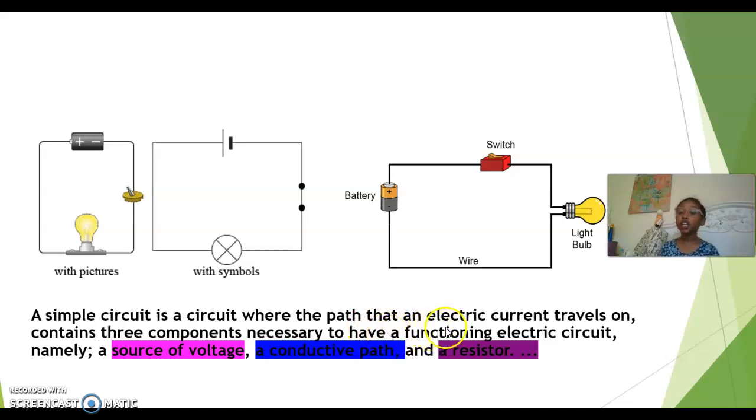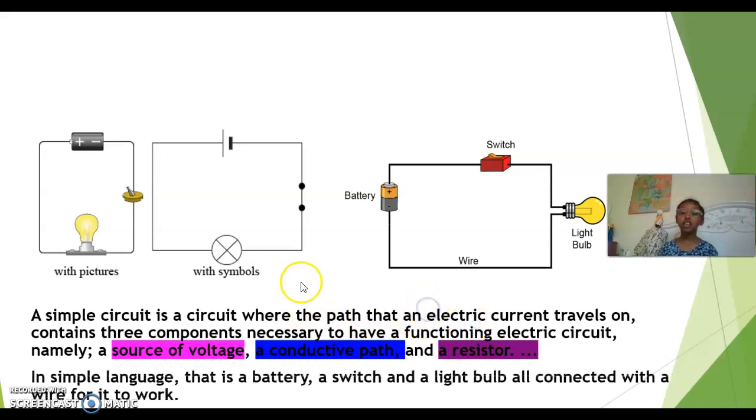a functioning electric circuit, namely a source of voltage, a conductive path and resistor, and a load. In simple language, that is a battery, switch, and a light bulb that's connected to the wire